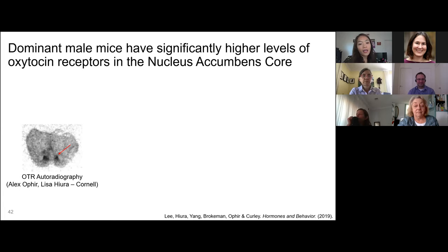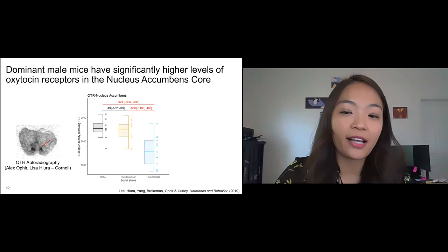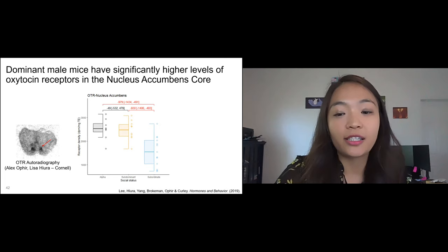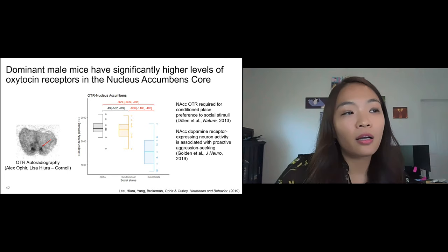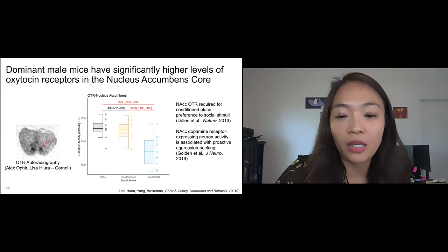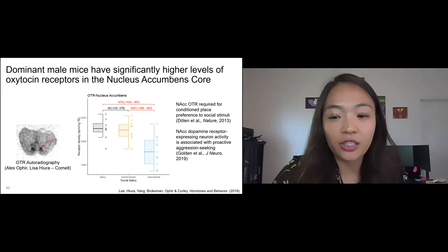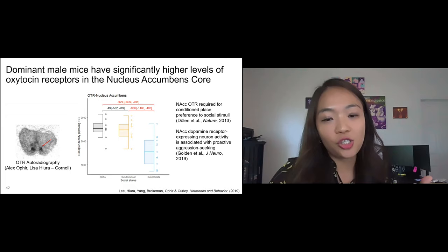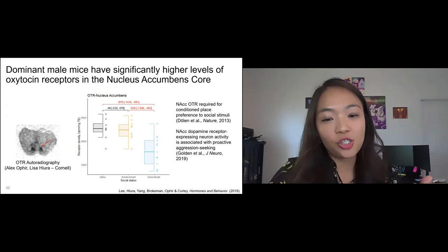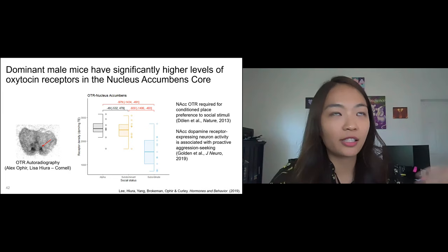An exemplar brain section shows the nucleus accumbens brain region, which is involved in the reward system and dopamine signaling. The darker staining shows oxytocin receptors in the nucleus accumbens core. This was the brain region with the biggest effect size — both alpha and sub-dominant male mice showed higher oxytocin receptor density compared to subordinate mice. This was quite an interesting result because previous literature showed this brain region, and oxytocin signaling within it, is associated with the motivation to engage in social interaction. We thought this could be related to the behavior pattern where alpha or sub-dominant males usually initiate aggressive social interactions.